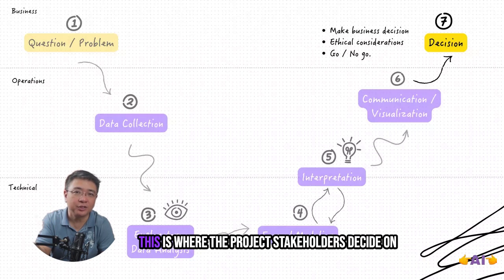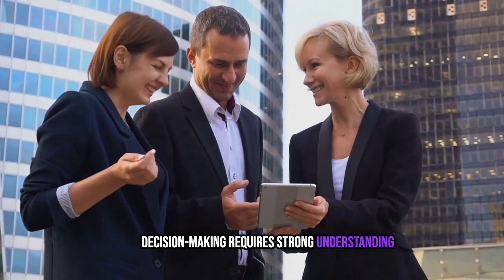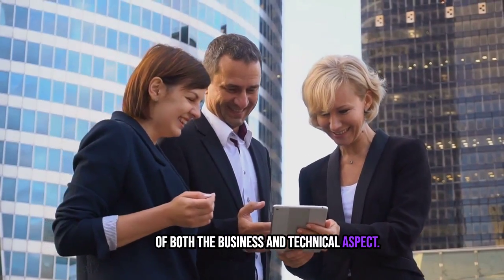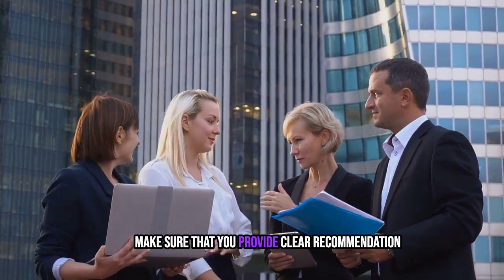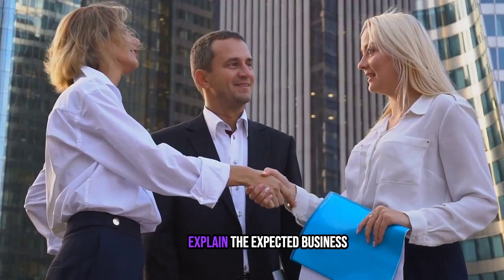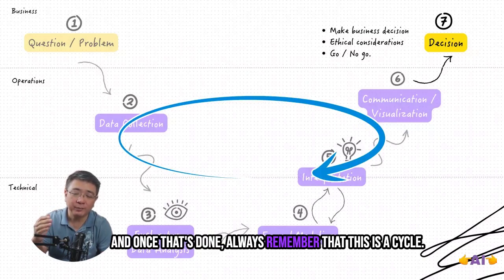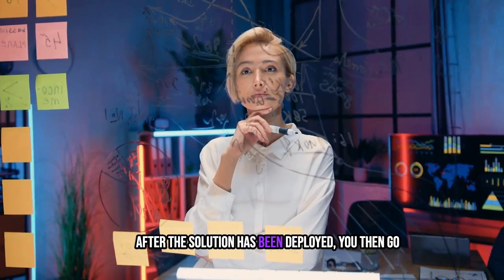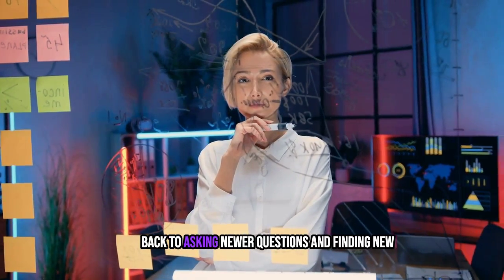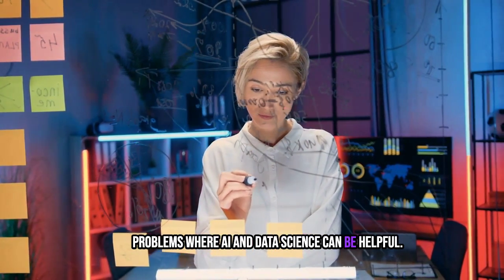And the last step is business decision. This is where the project stakeholders decide on whether to implement the recommendations or not. Decision making requires strong understanding of both the business and technical aspects. Make sure that you provide clear recommendations and actionable steps that are backed by data. Explain the expected business impact and ethical considerations. And once that's done, always remember that this is a cycle. After the solution has been deployed, you then go back to asking newer questions and finding new problems where AI and data science can be helpful.